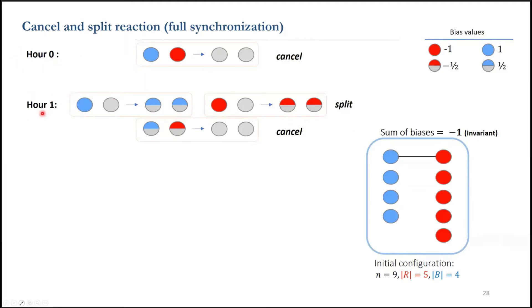Now we will add the previous synchronization stream to do cancel and split reactions in an orderly manner. Here, we're showing an example of a population of size 9 with this initial configuration.